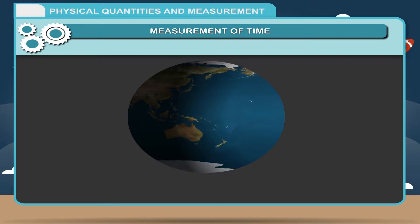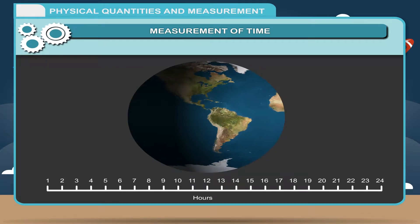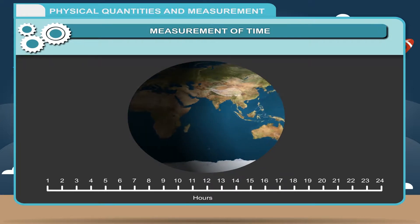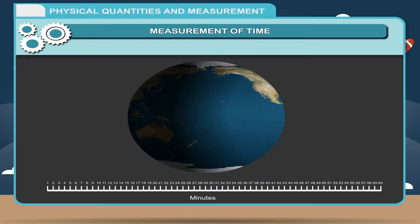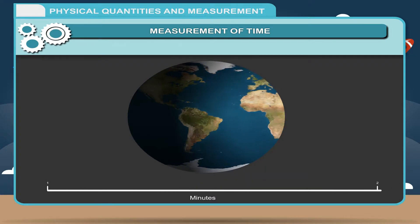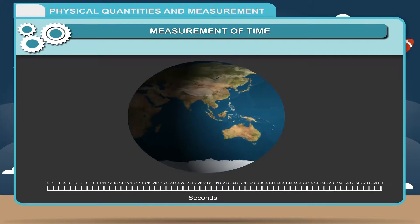The mean solar day is divided into 24 equal intervals and each interval is called an hour. One hour is further divided into 60 equal parts and each part is called a minute. One minute is further divided into 60 equal parts and each part is called a second.